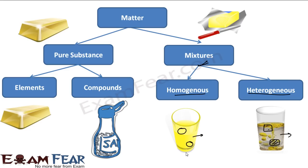Matter is classified based on purity into two parts: pure substance and mixture. Pure substance is further classified into elements and compounds. Elements are further classified into metals, non-metals, and metalloids. Compounds are classified into organic compounds, non-organic compounds, covalent compounds, and so on, depending on the criteria.